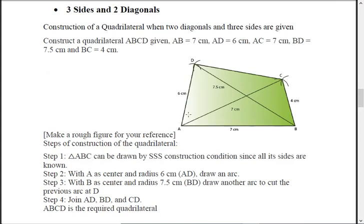Next case: three sides and two diagonals are known. Here AB, AD, and AC are known, along with diagonal BD and side BC. The key rule is: always start from that side whose endpoints you know something about. If you take side AB, then from A you know AC and AD — two things. From B you know BD and BC — again two things. So you can start from AB.